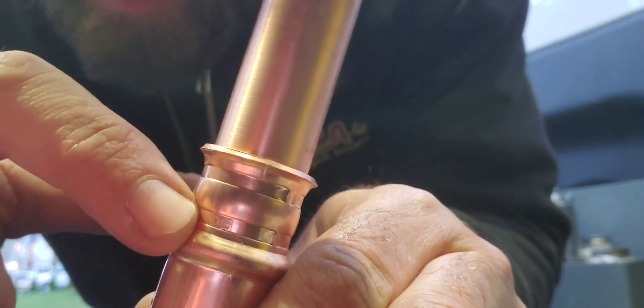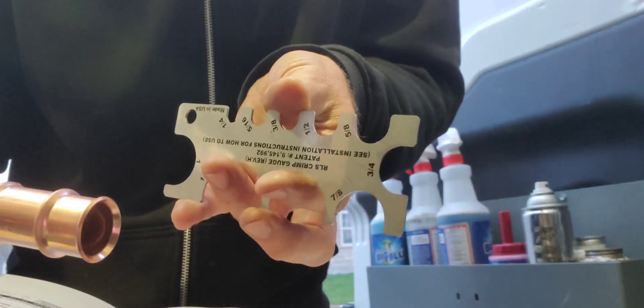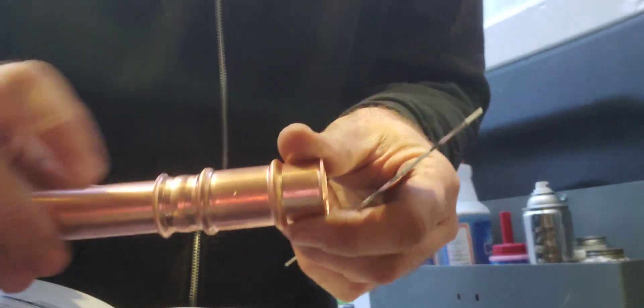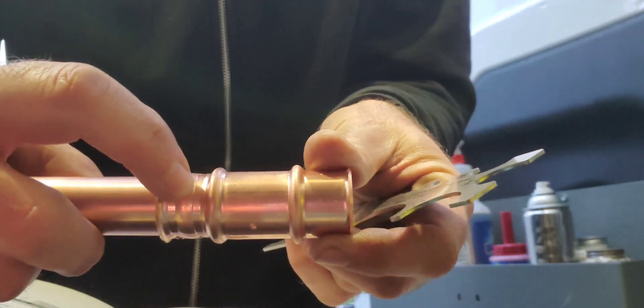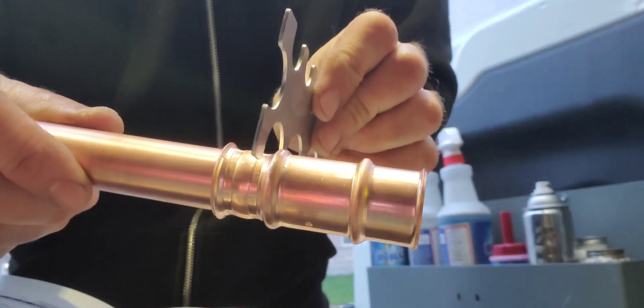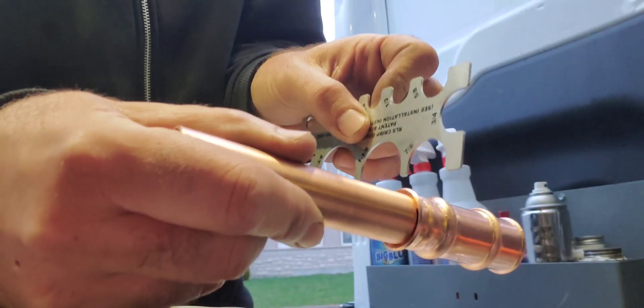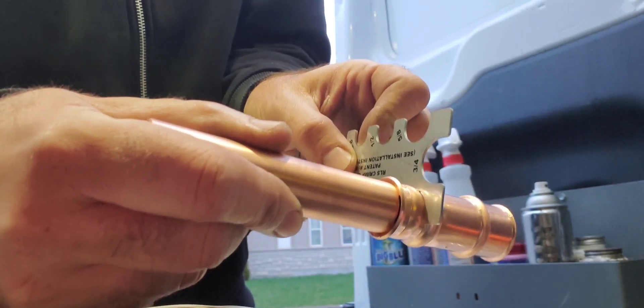I showed you where the RLS stamp was, which is right here. What you do is you take the crimp gauge for 7/8 and stick it on there. Now that fits on there nicely. If that doesn't fit on there, it's under-crimped and you're going to have to do it again.